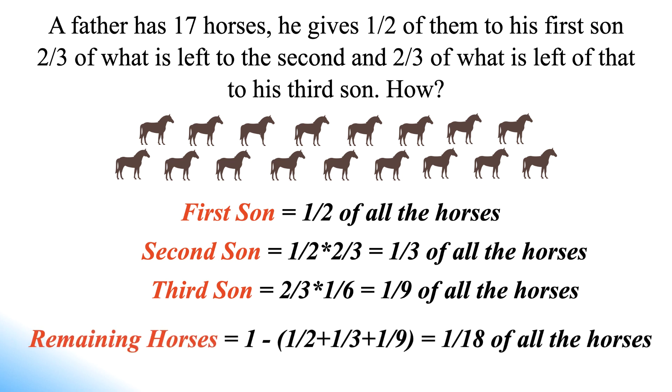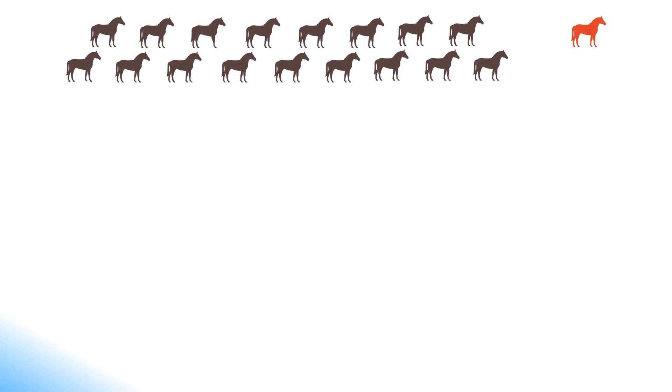This approach may be confusing. The best approach to solve this riddle is just to consider an imaginary horse and merge the imaginary horse into those 17 to make it 18, an even number. Now distribute these 18 horses according to the question.